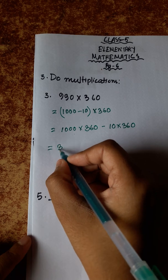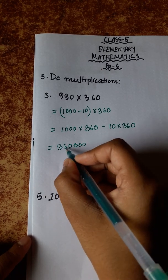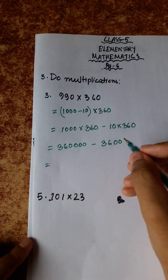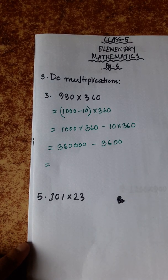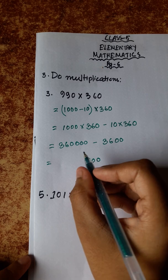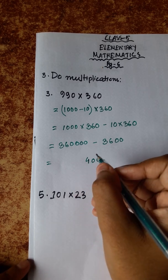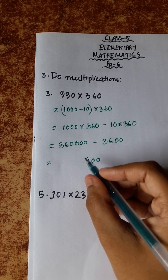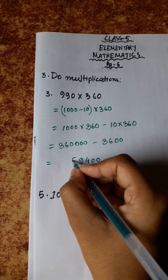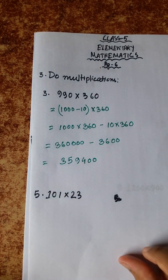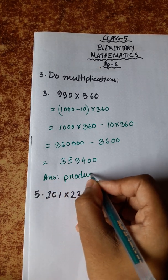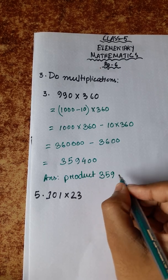360 into 1,000 is equal to 360,000. And 360 into 10 is equal to 3,600. Now, 360,000 minus 3,600: 0 minus 0 is 0, 0 minus 0 is 0, 10 minus 6 is 4, and carrying gives us 9, 5. The answer is 359,400. So, answer product is 359,400.